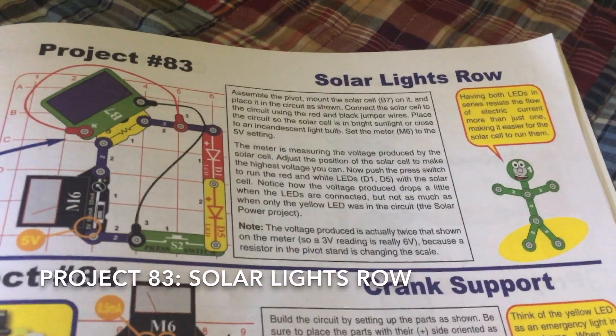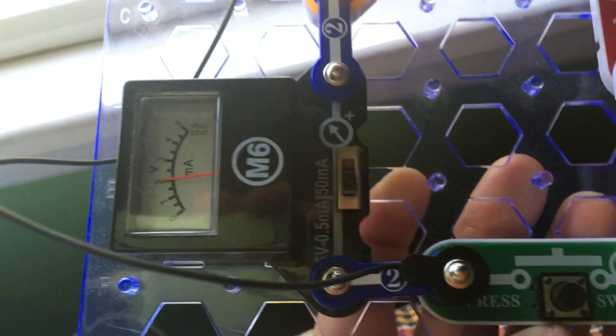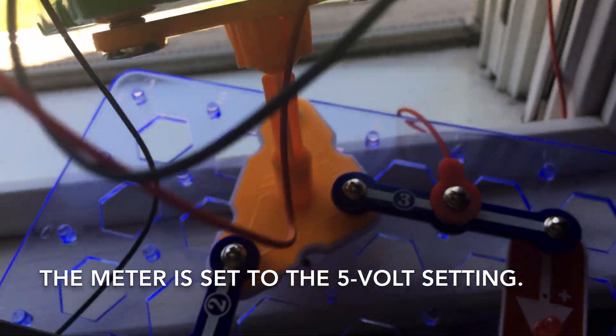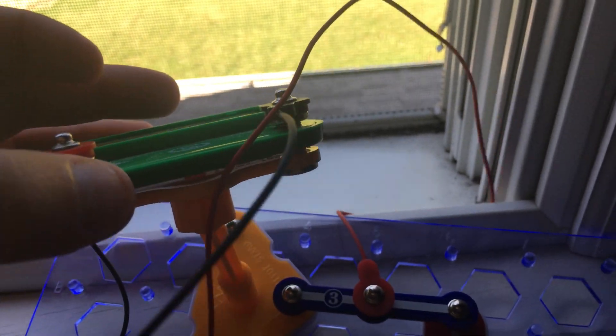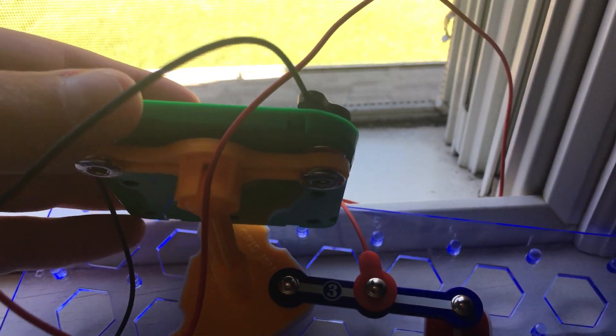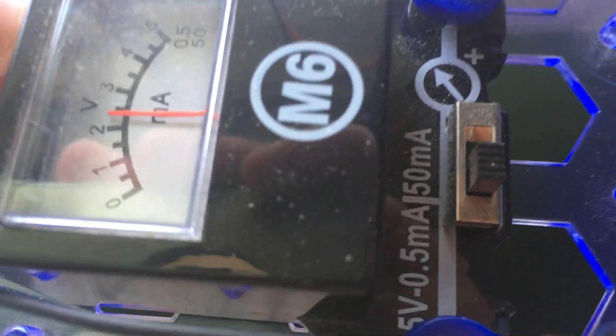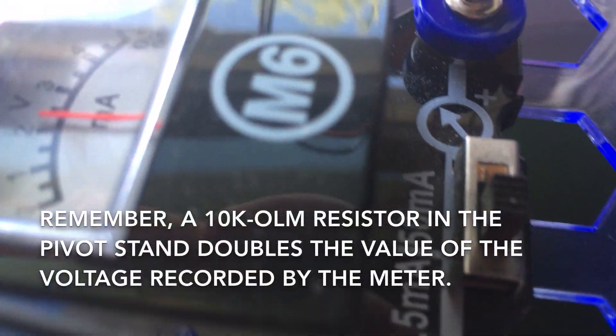83 is solar light's row. So, with the meter set to the 5 volt setting, we will adjust the solar cell so that it receives just the right amount of sunlight. So, I'm going to have it right out this window. And then, we can see that it reads, the meter reads close to 2.5 volts.